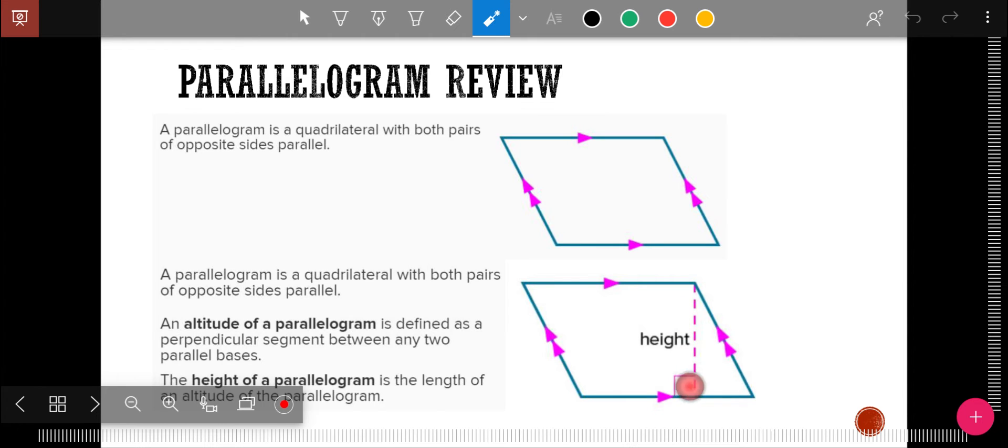The height is sometimes called the altitude. Realize that because this is the definition, two pairs, both sets of opposite sides parallel, a rectangle would fit this definition. A rhombus would fit this definition. And a square would fit this definition.